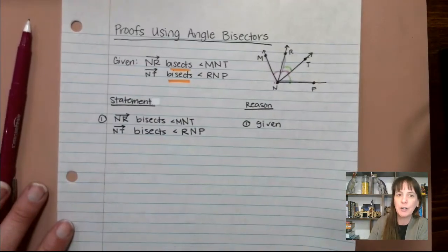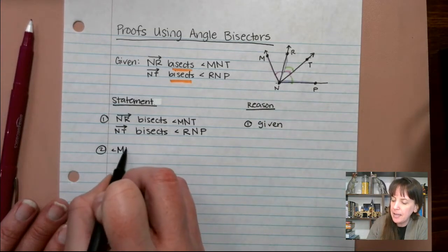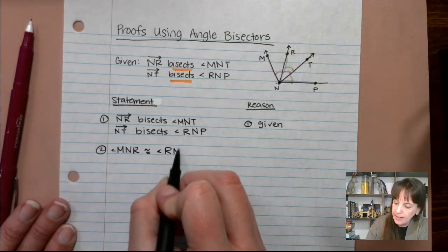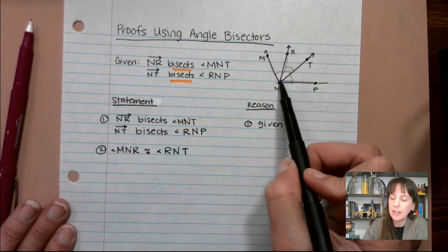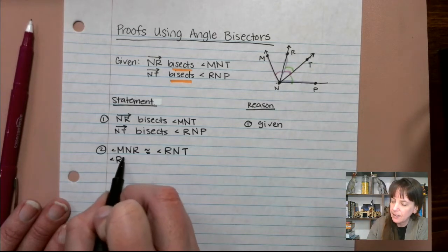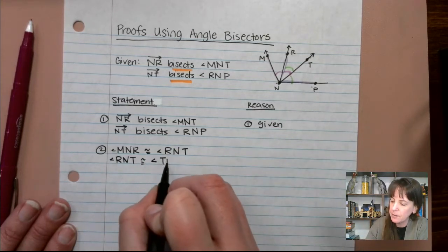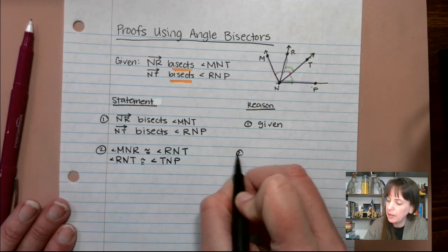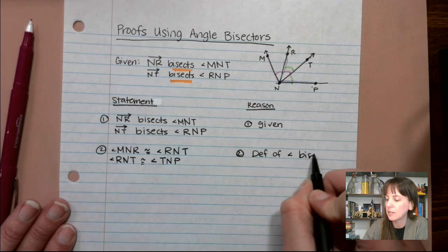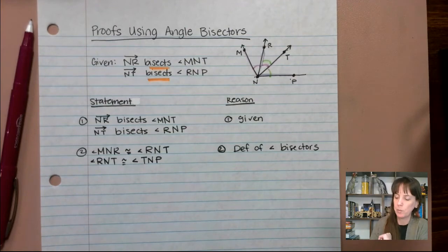So what does that mean? For number two, we can say that angle M-N-R is congruent to angle R-N-T, this angle right here. We also know that R-N-T is congruent to T-N-P, angle T-N-P. And now, this is what I was saying before because of the definition of angle bisectors. Definition of angle bisectors. The very definition is that it creates two equal parts.